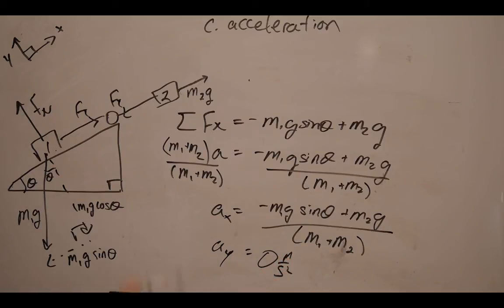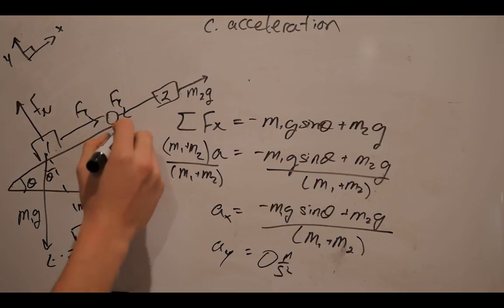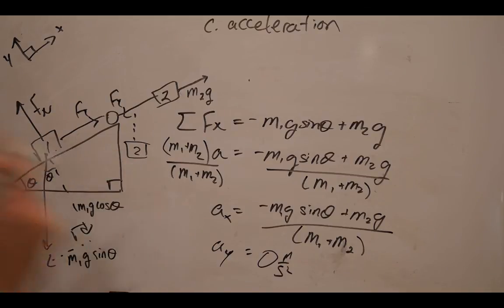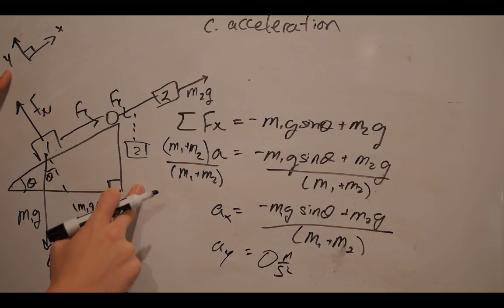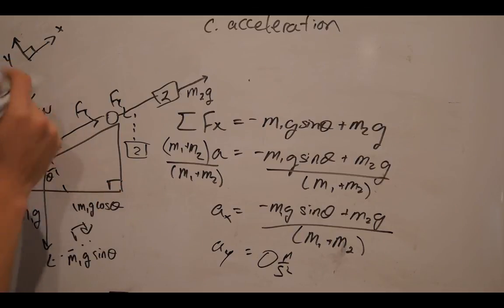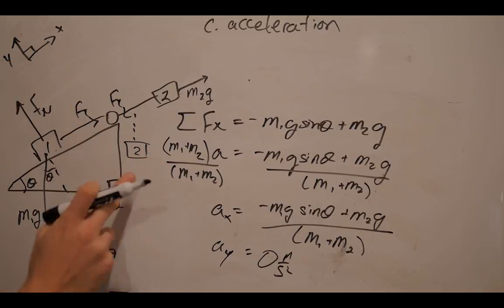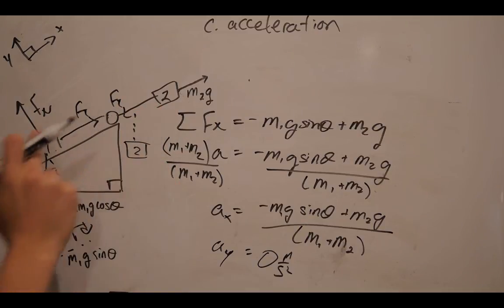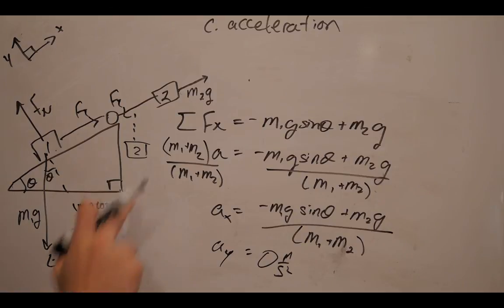Now, if you're confused because you're thinking, well, M2, which used to hang down like this, is going to be accelerating in the y direction. Think about it. Remember, our y direction is not straight down anymore. It's along this axis. Not only that, but we readjusted it so that M1 and M2 are going to be moving in one direction. So, there is no acceleration along the y axis.